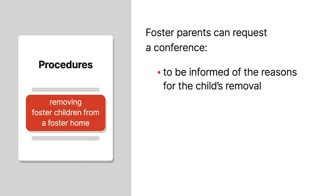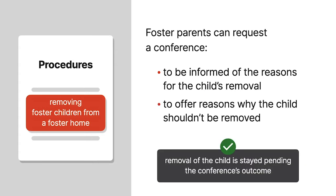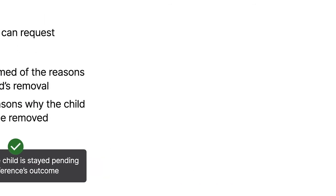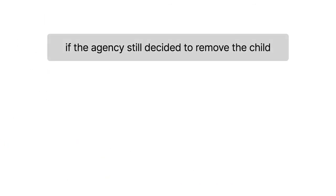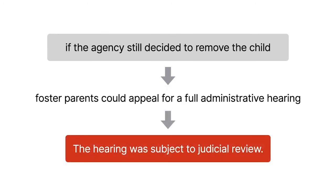At the conference, foster parents could also offer reasons why the child shouldn't be removed. Removal of the child was stayed pending the conference's outcome. If the agency still decided to remove the child, foster parents could appeal for a full administrative hearing. The decision from that hearing was also subject to judicial review.